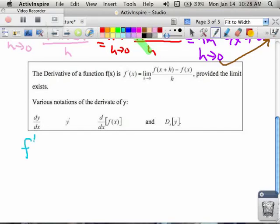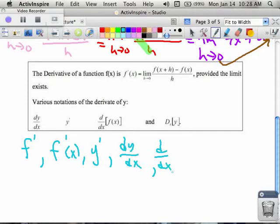Sometimes they'll write it as f prime of x. Sometimes they'll talk about it as y prime. Sometimes they'll call it dy dx, and sometimes they will say d dx of something.